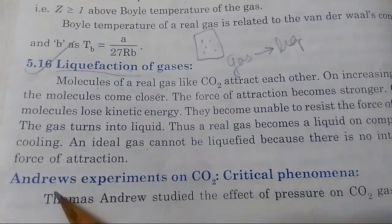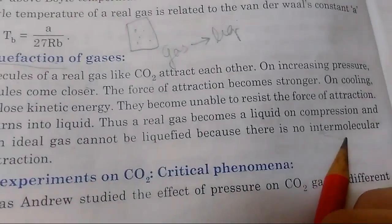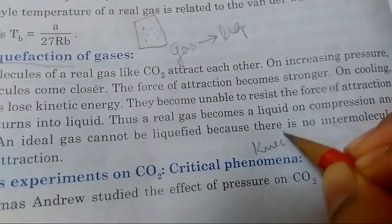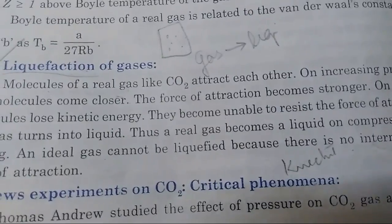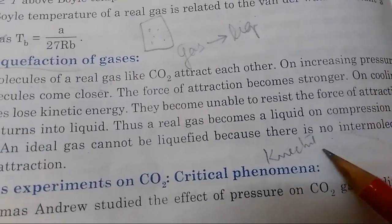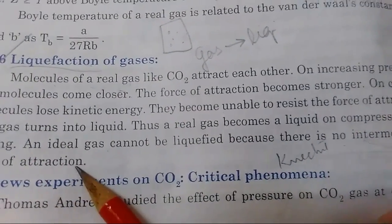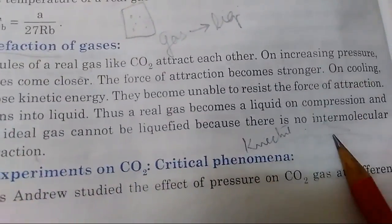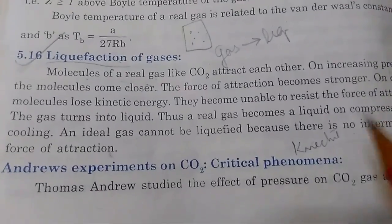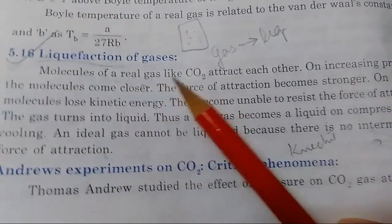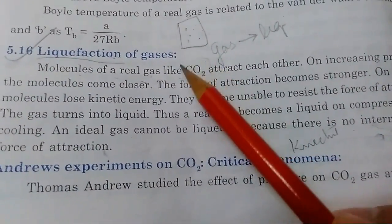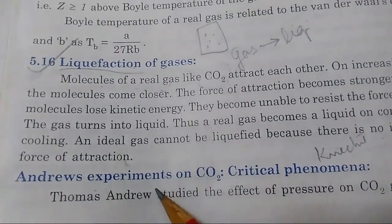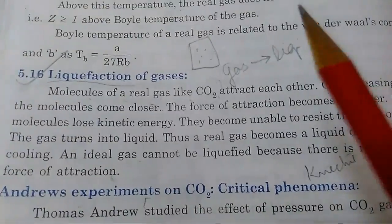Similarly here, they're talking about real gases. According to them, ideal gas cannot be liquefied because there is no force of attraction. Remember the kinetic theory of gases? The fourth postulate says there should be no intermolecular force of attraction between each molecule. Here we're talking about a real gas, and the example we're taking is carbon dioxide.